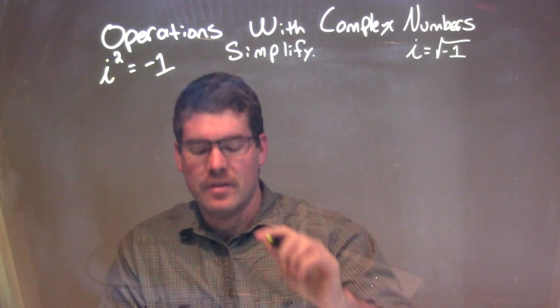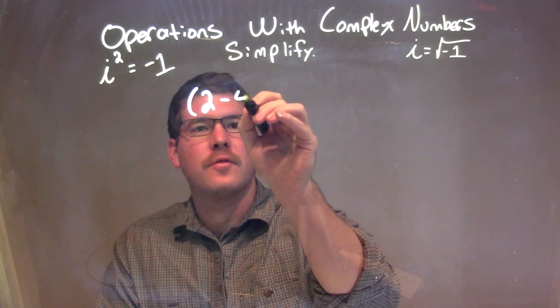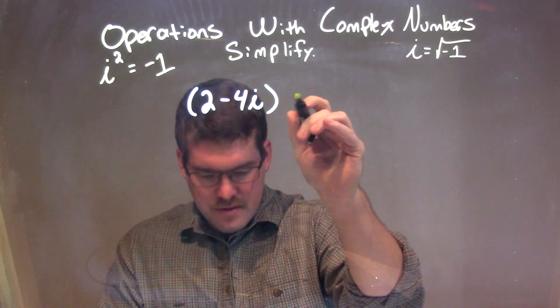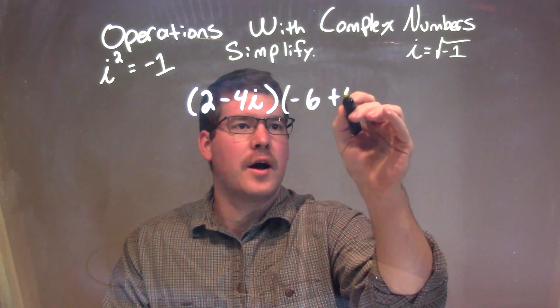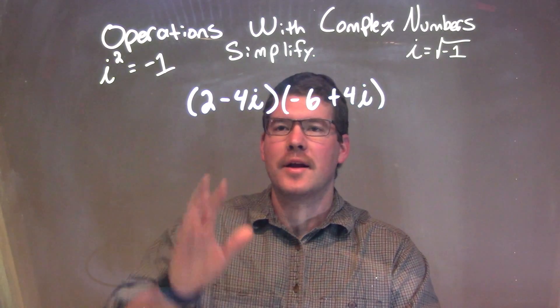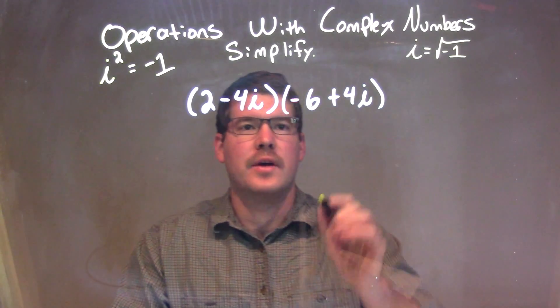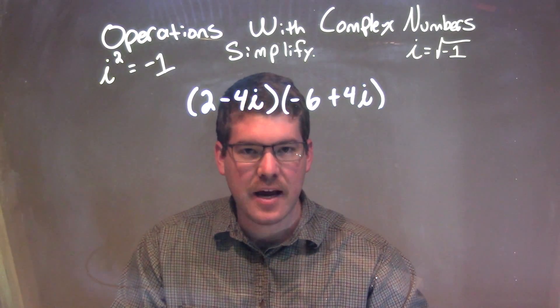If I was given this: 2 minus 4i times negative 6 plus 4i. What we want to do is we're going to, in a sense, FOIL this. So I multiply all parts of my first parenthesis by all parts of my second parenthesis.